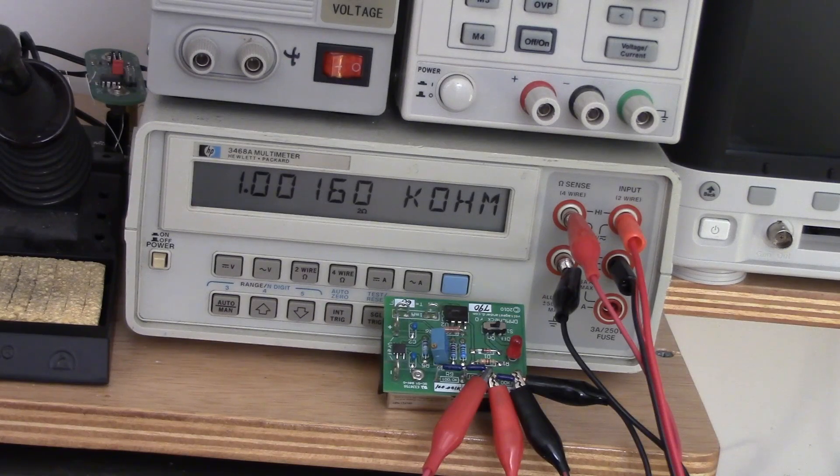So here, the DMM Check's 1K resistor is hooked up to a nice little HP meter, and we're getting basically the same value that we saw on the cheap Chinese meter, which is sort of reassuring.